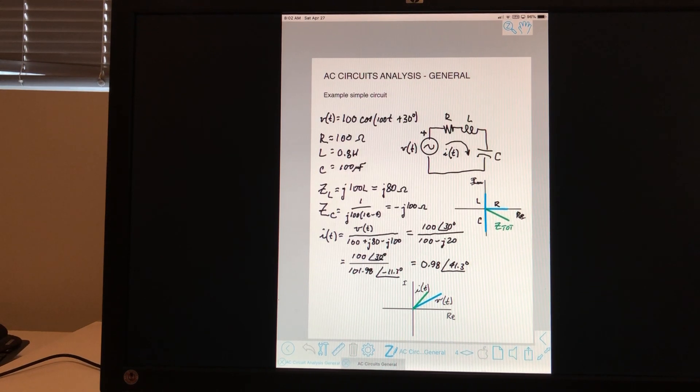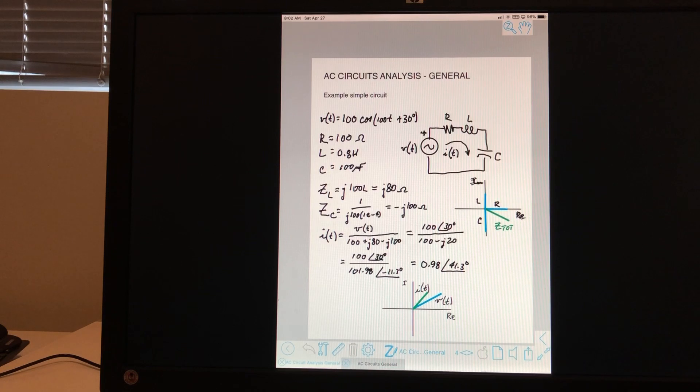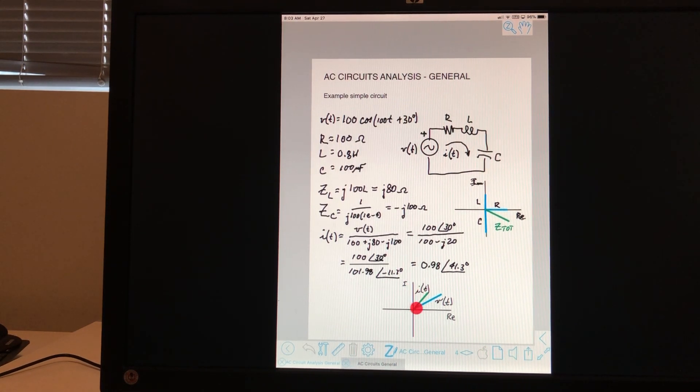So I just want to keep you aware of the difference between the complex number that is representing the impedance in the circuit and the complex number here. They're both complex numbers, but these are phasors because there is a time function as part of it.